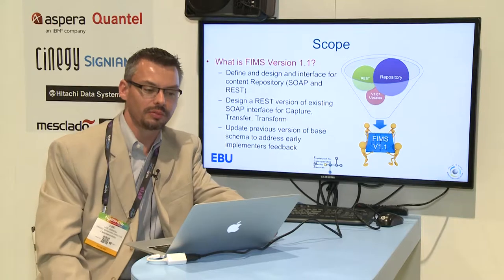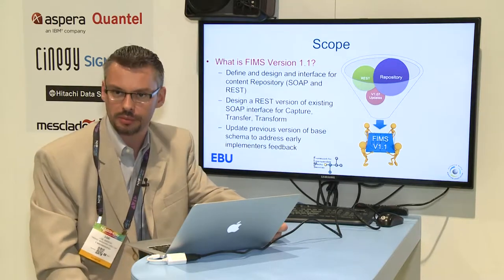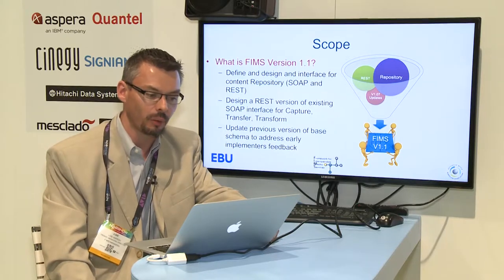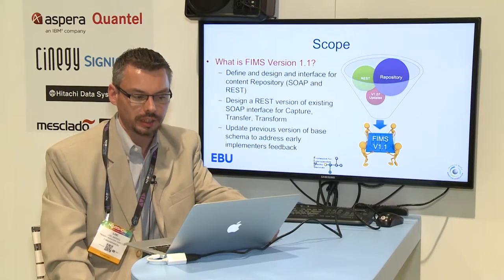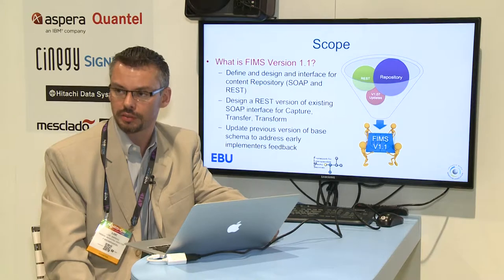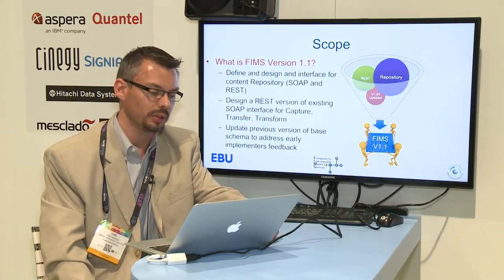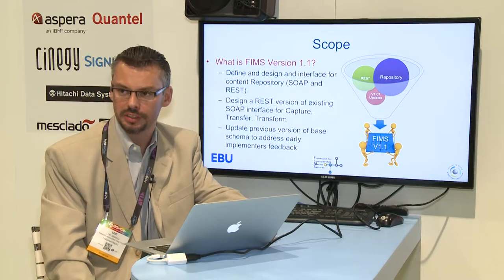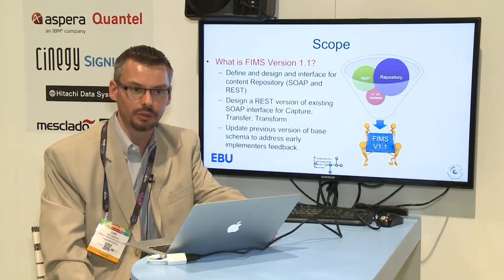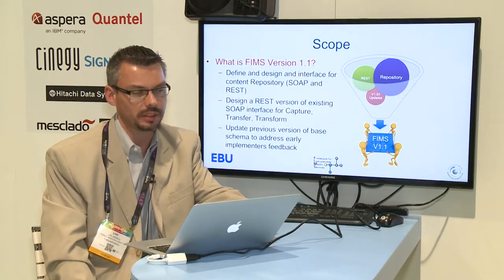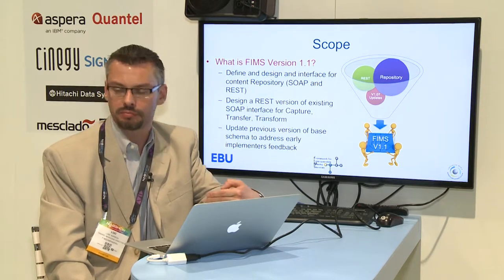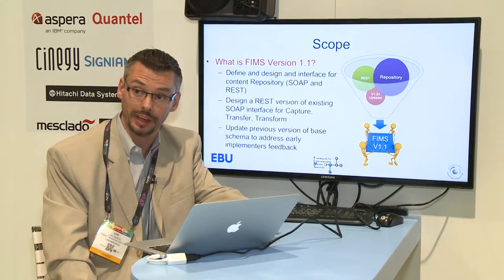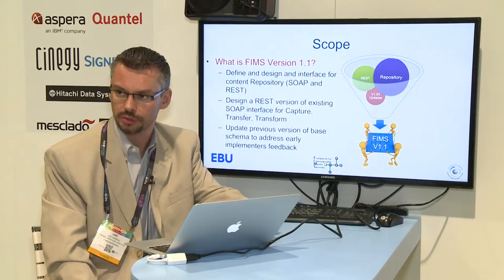The scope of FIMS 1.1 includes a couple of things. Number one, and that's really one of the very important components of 1.1, is there's a repository interface that has been modeled as a new interface to the existing interfaces already provided as part of FIMS version 1.07 — that were capture, transfer, and transform.